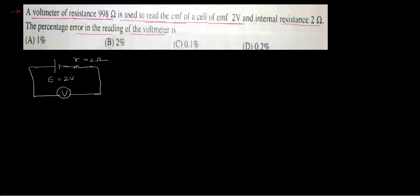And that voltmeter is having a resistance of, that is also a device, 998 ohms. In that case, what is the voltage read by that voltmeter is the kind of question.